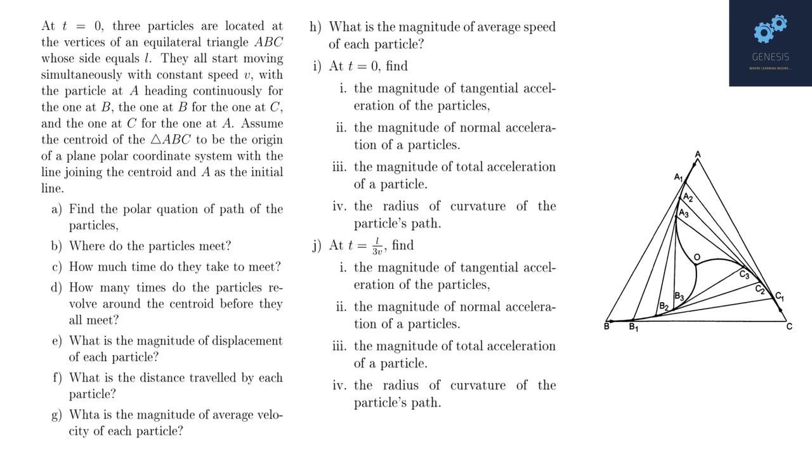Today's problem goes like this. At t equals 0, three particles are located at the vertices of an equilateral triangle ABC whose side length equals L. They all start moving simultaneously with constant speed V with the particle at A heading continuously to the one at B,